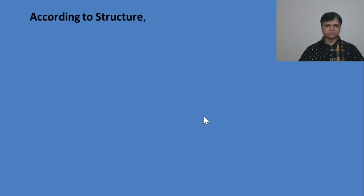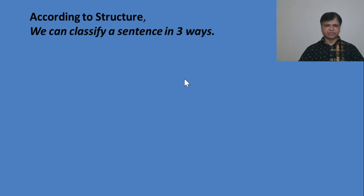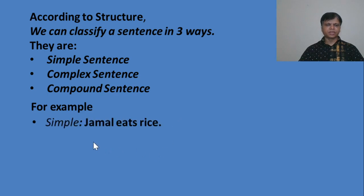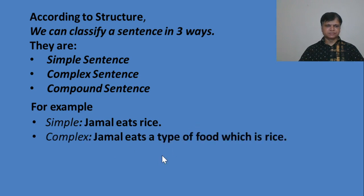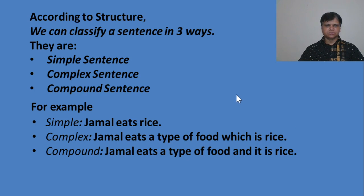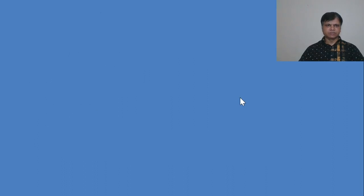According to structure, we can classify a sentence in three ways. They are: simple sentence, complex sentence, and compound sentence. For example — simple sentence: 'Jamal eats rice.' Compound sentence: 'Jamal eats a type of food and it is rice.' So these three sentences are examples of simple, complex, and compound sentences. Now let's see what is a simple sentence.